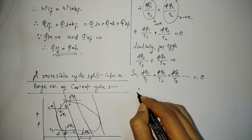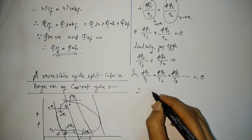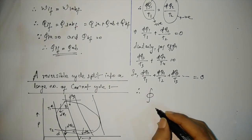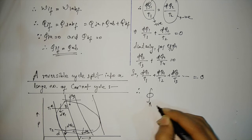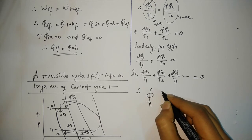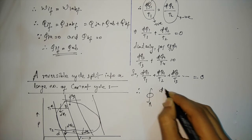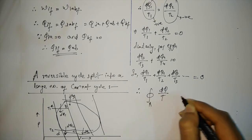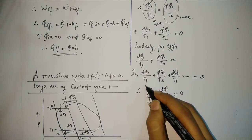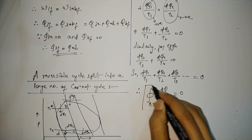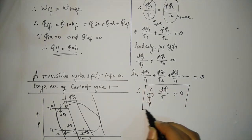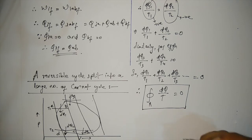Therefore, we can write the cyclic integral of dq/t equals 0. This is the Clausius theorem.